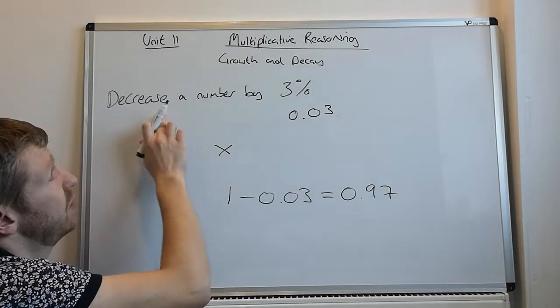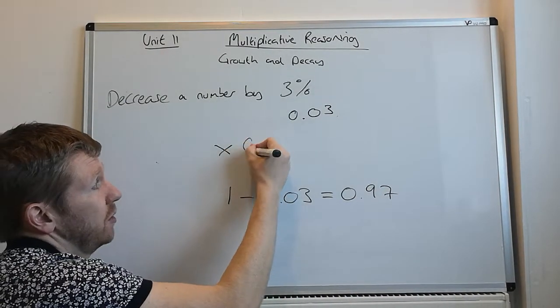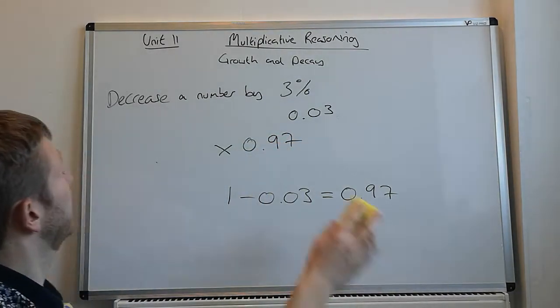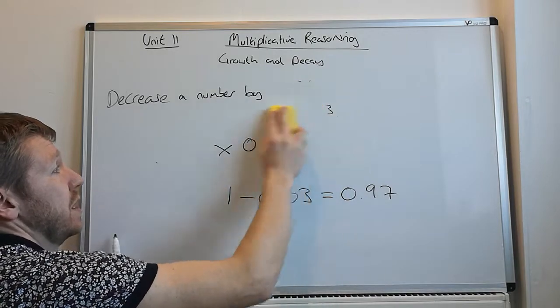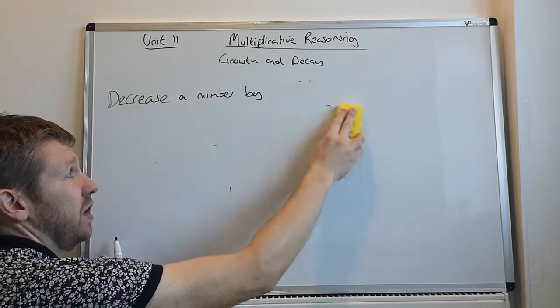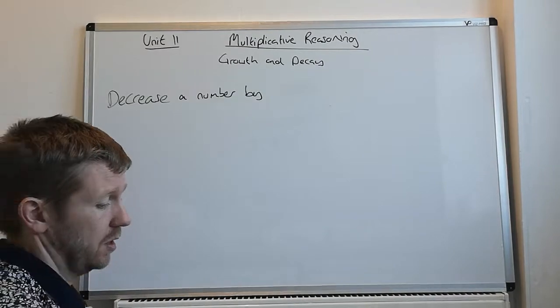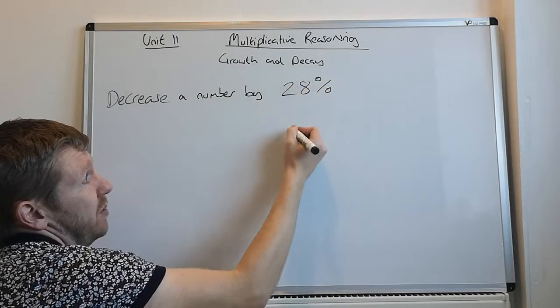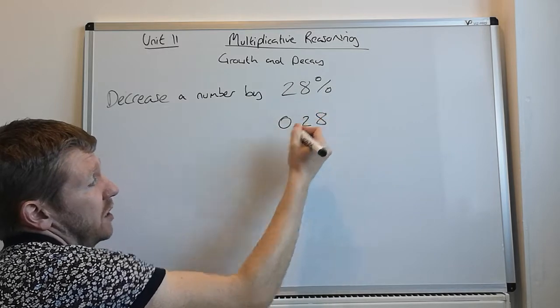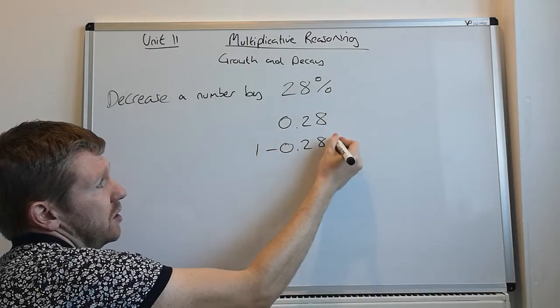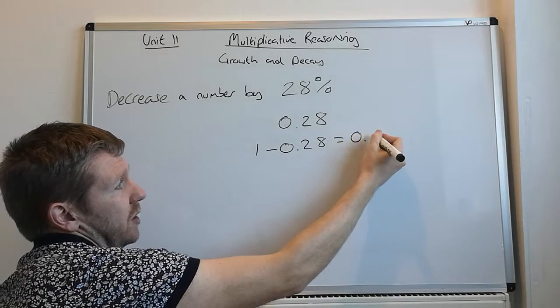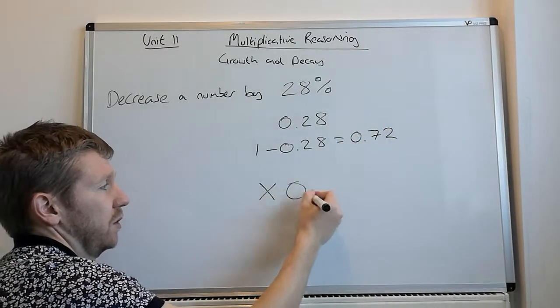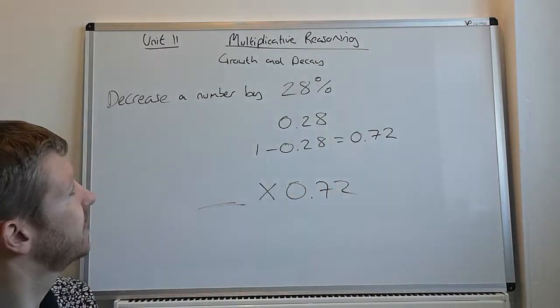So, you want to decrease the number by 3%, you times by 0.97. We'll do another one of those, if we were to decrease the number by 28%, 28% we know is 0.28. So, you do 1 minus 0.28, which is 0.72. So, you'd multiply by 0.72, whatever that number is.